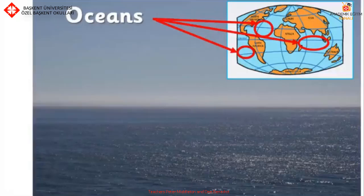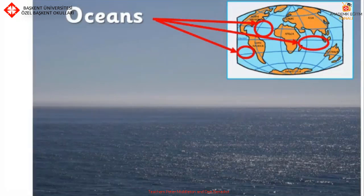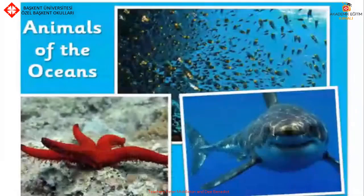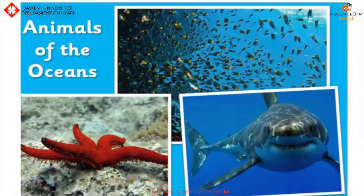This is the ocean. You can find the oceans around the world. What animals can you find in the ocean? You can find a starfish, shark and fish in the ocean. Can you think of other animals that are found in the ocean?